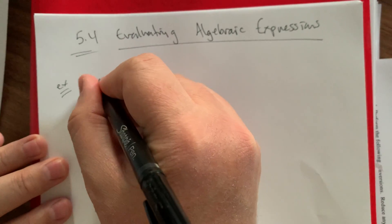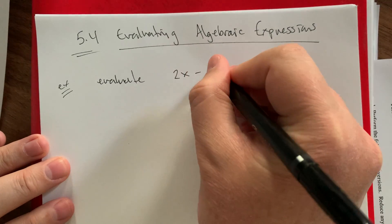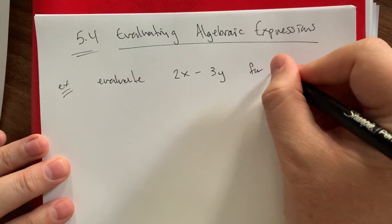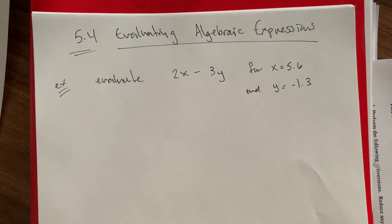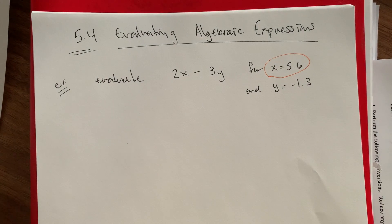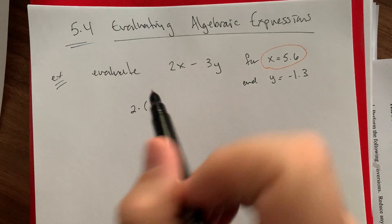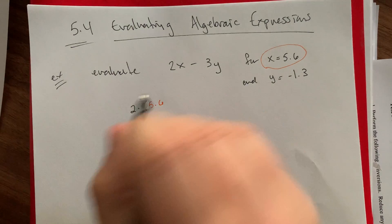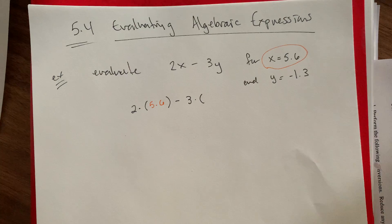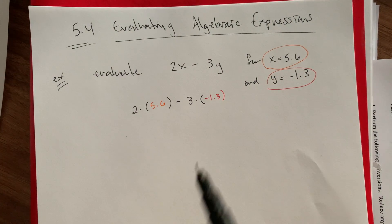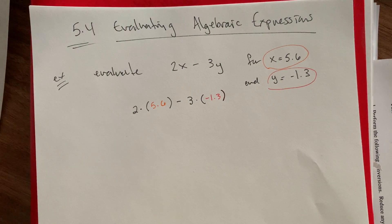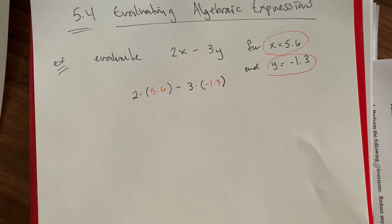So what does this mean? For example, let's evaluate. Given an algebra expression, something like 2x minus 3y. So let's sub in some values where the x is 5.6 and my y value is negative 1.3. Just as a for instance, we could essentially pick any kind of numbers we wanted to here. So all I'm going to do is sub these values in and then it becomes an order of operations problem, essentially. So let's say my x is in orange. So 2 times x, so 2 times 5.6. Minus 3 times my y value. Let's do the y in red, maybe. Negative 1.3.